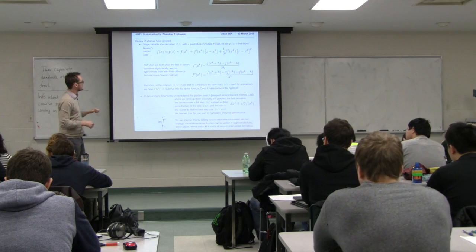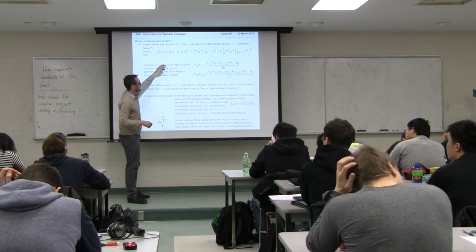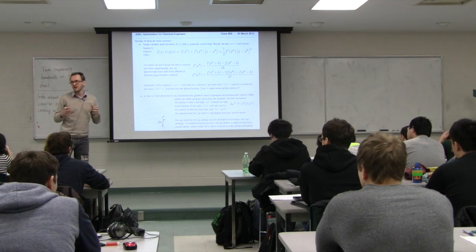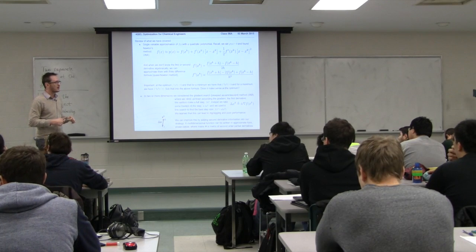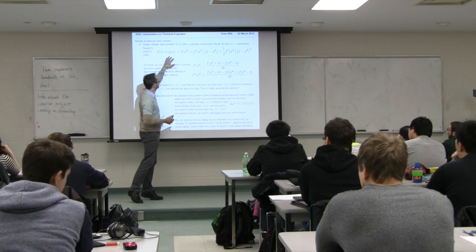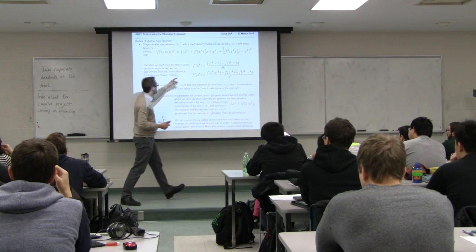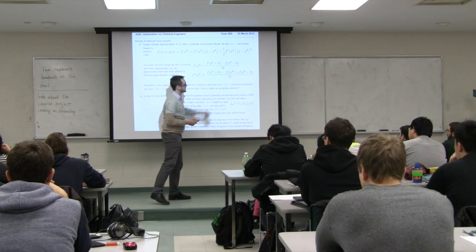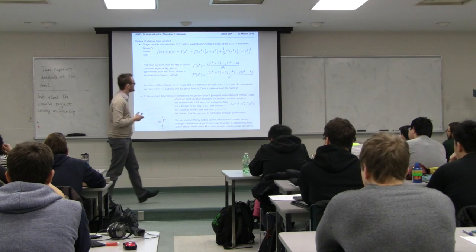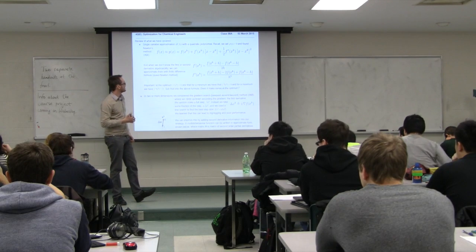Let's recap the single variable case. The reason I've written this function up here is you're going to see parallels between this case and the multidimensional case. Since we can draw and visualize a single-dimension function quite readily, it helps to see the one-to-one mapping. We take our function and do a Taylor series approximation around a certain point — it's got a first derivative f'(xk) multiplied by x minus xk, plus a second derivative for a higher-level, improved approximation.